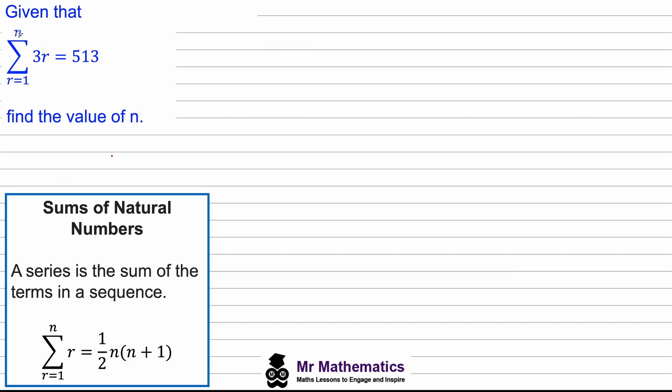We've been asked to work out this value of n. So the first thing we're going to do is move this three out of the summation, so we have three multiplied by the summation of r between r equals one to n is equal to 513. Now if we focus on this part of the equation.